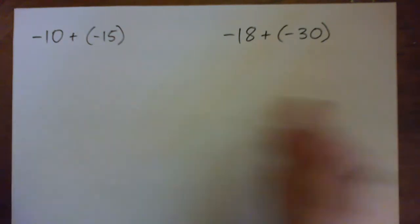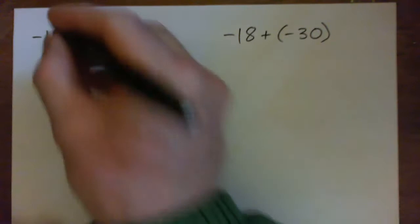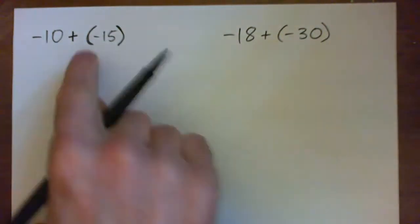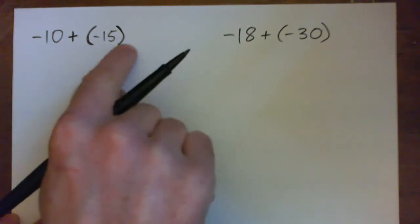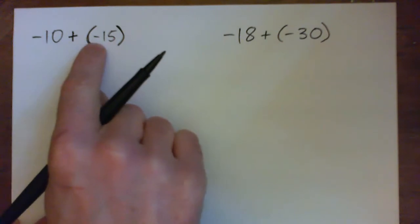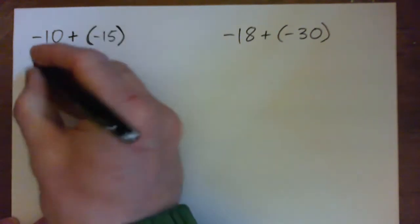So we're adding. When you have a plus sign beside the parenthesis, that does not mean multiply. The only reason for this parenthesis is to separate the positive plus sign from the negative sign. If you didn't have that parenthesis here, it would look like this.